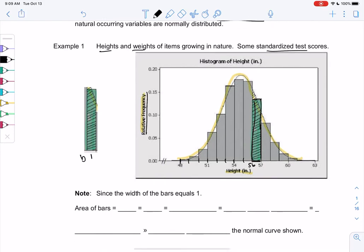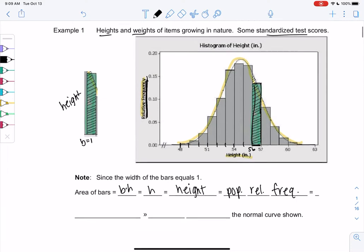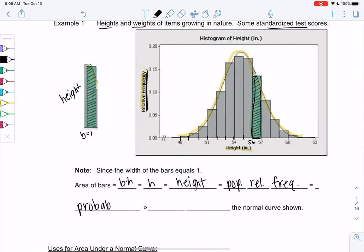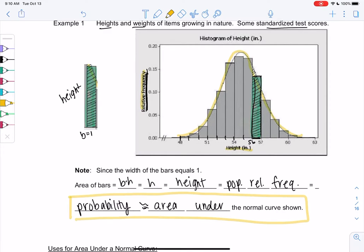So if we were to call this base and height, the area of the bars will be b times h. We just decided that the base, or the width, is one, so it'll just be equal to the height. And the height is measuring relative frequency, specifically population relative frequency, because we're assuming we have all the data. And what we're just learning now is that this is also probability. We learned that in chapter five, relative frequency is probability, and that is going to be approximately equal to area under the curve, under the normal curve.